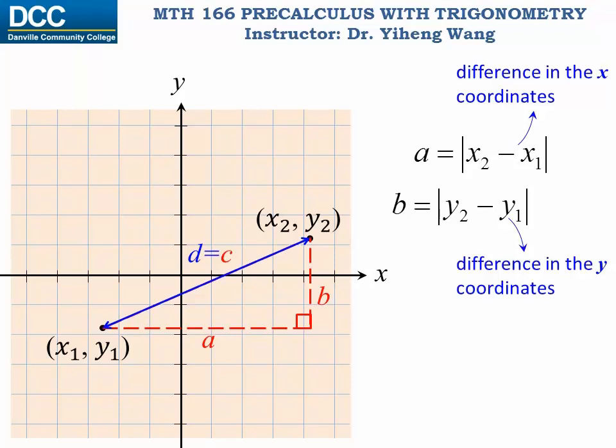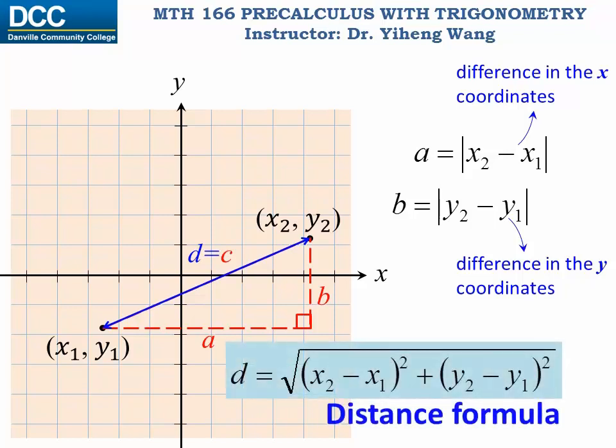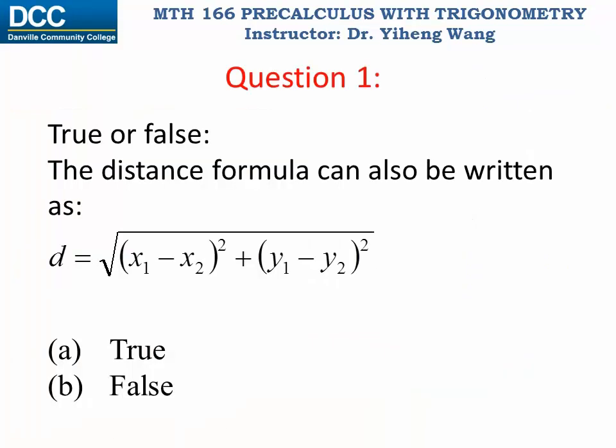Notice the absolute signs. This is because a and b both represent lengths, and lengths can only be non-negative. Therefore, from the Pythagorean theorem, we can derive the distance formula of the two points in the Cartesian plane. Now please answer the following questions.